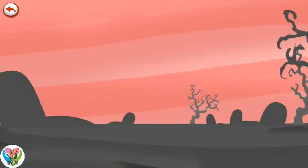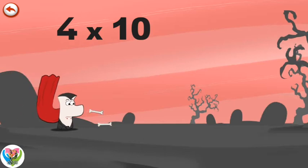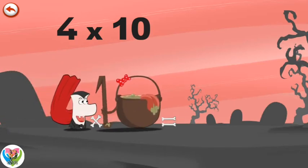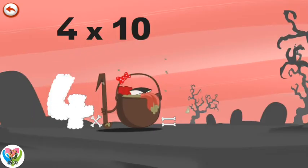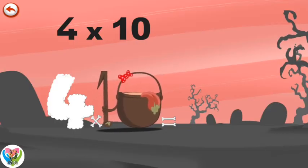What's the story of four times ten? When Vamp 4 meets the potion Magi-ten, it makes him very very hungry. He dives head first into the cauldron and comes out feeling very full.